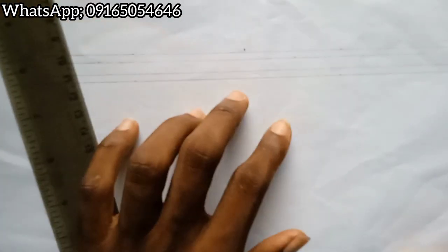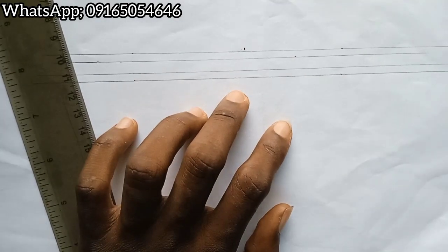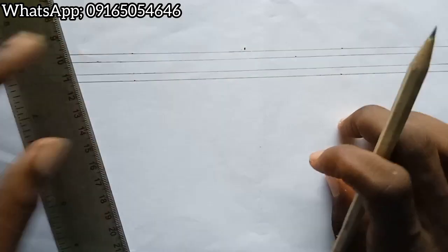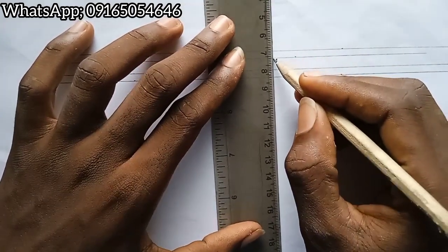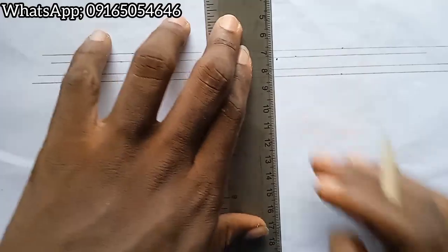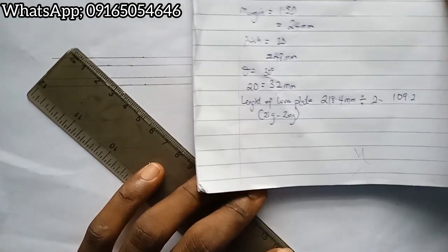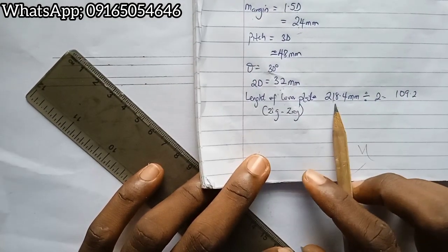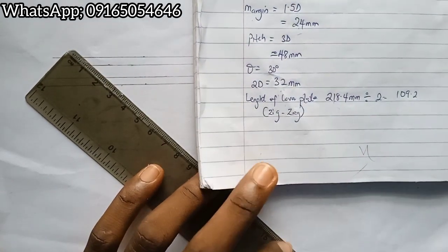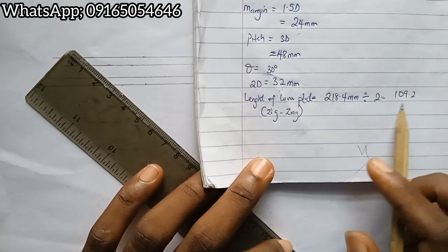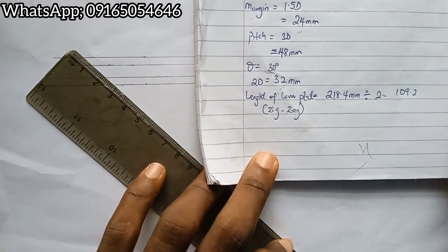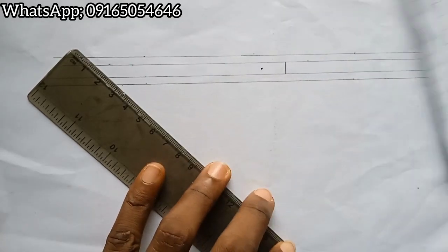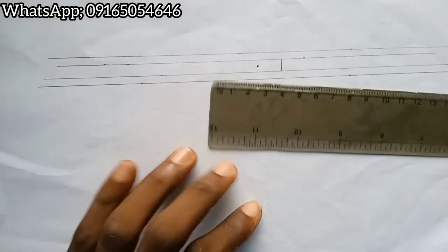These three lines will serve as the layers for our three different plates. Having done that, I will pick a point here maybe towards the center and draw it straight. Remember we were given that the length of our cover plate is 218.4 millimeters. To give even distribution I'll divide it by 2, which gives me 109.2, approximately 109 millimeters, so from this part here I'm going 10.9 centimeters.